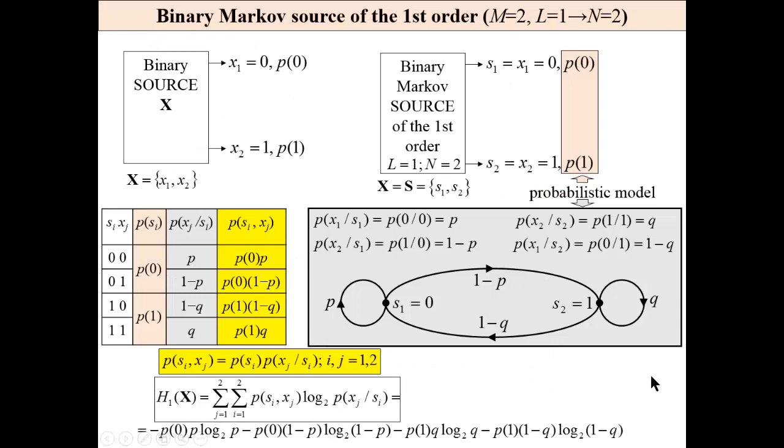For binary source of the first order, we have two states, 0 and 1. While we are in 0, we may stay in 0.